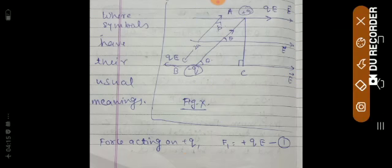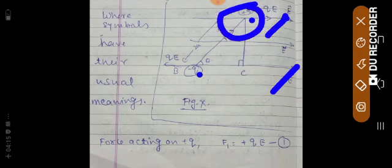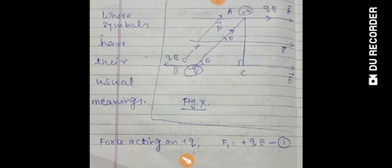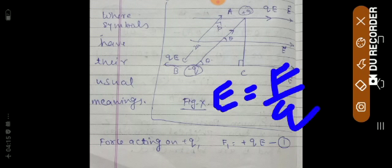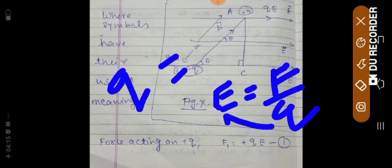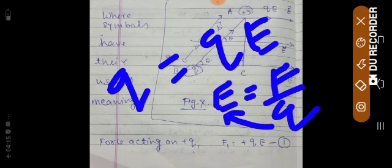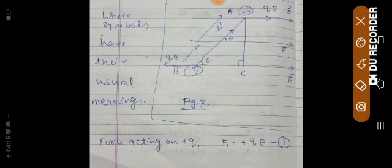The force acting on plus q is qE, and the force acting on minus q is also qE in magnitude. This comes from the formula: electric field E equals force divided by charge, so force equals qE. As you can see in the figure, the force on plus q and minus q are both of magnitude qE, but the minus charge experiences the force in the opposite direction.